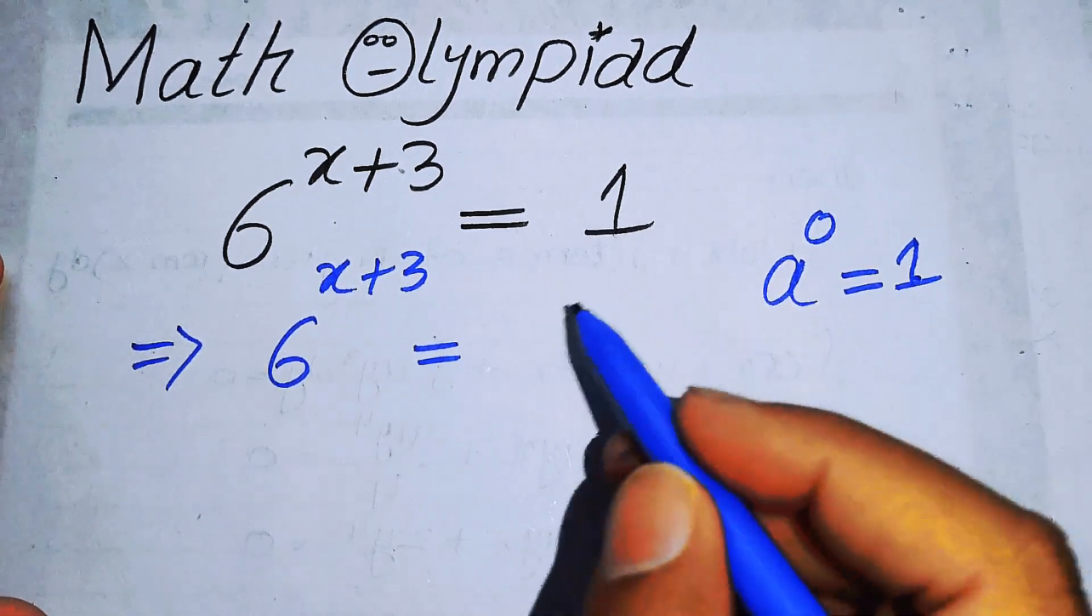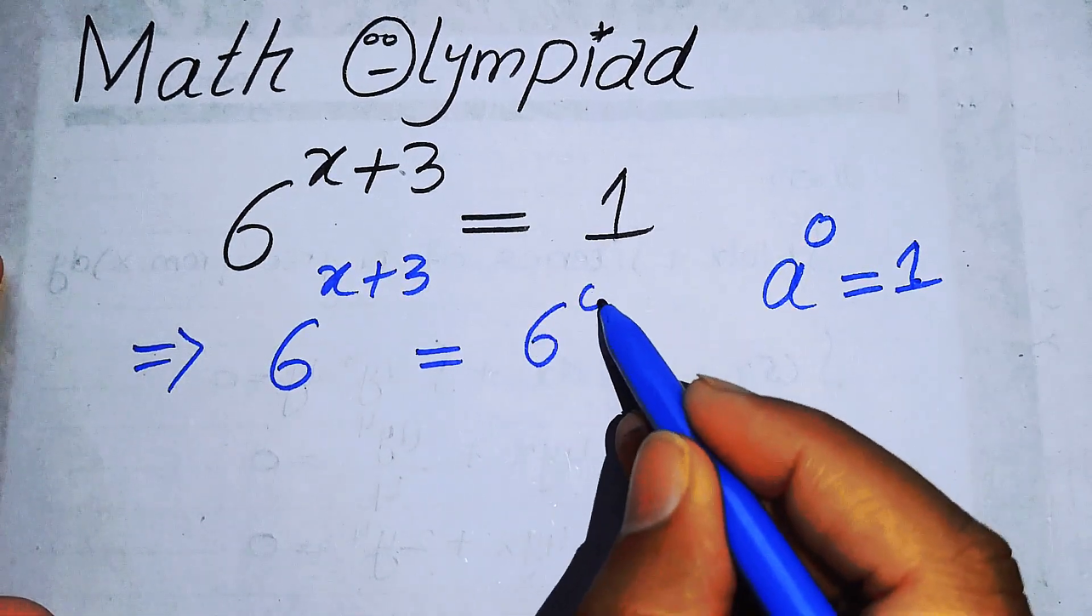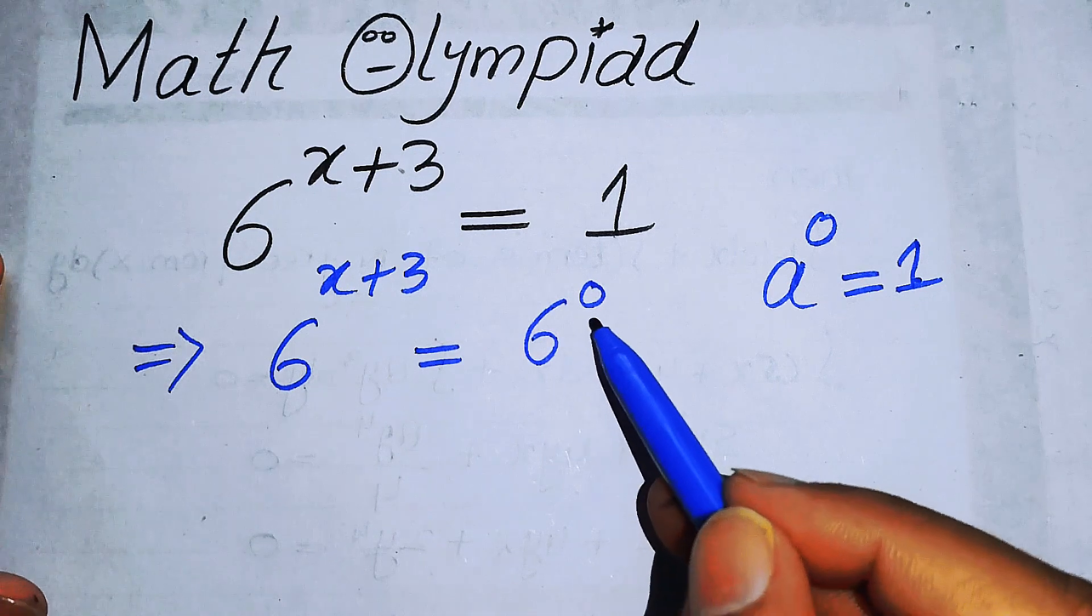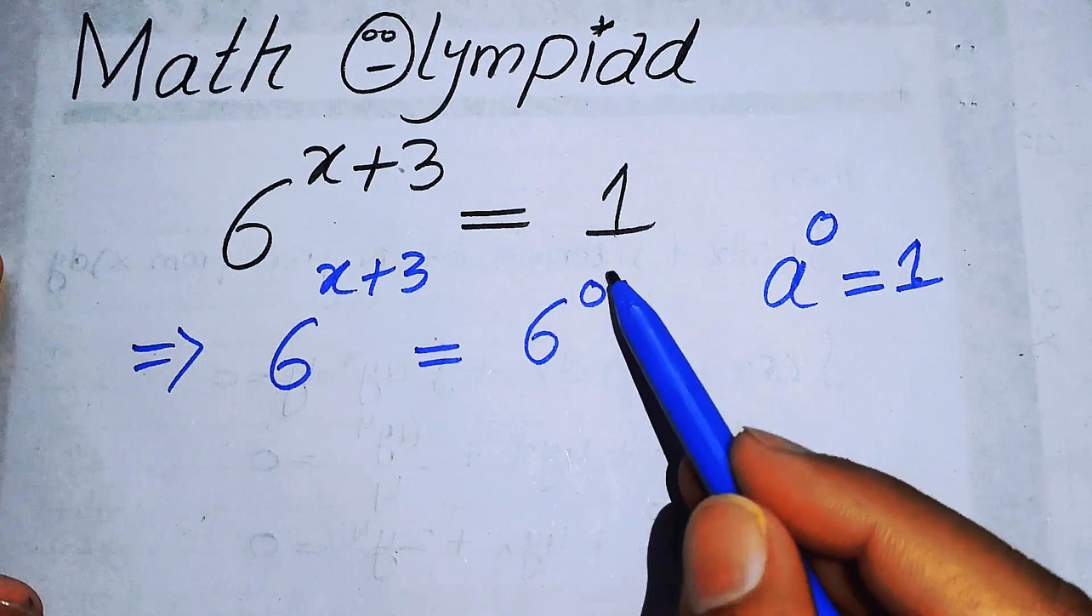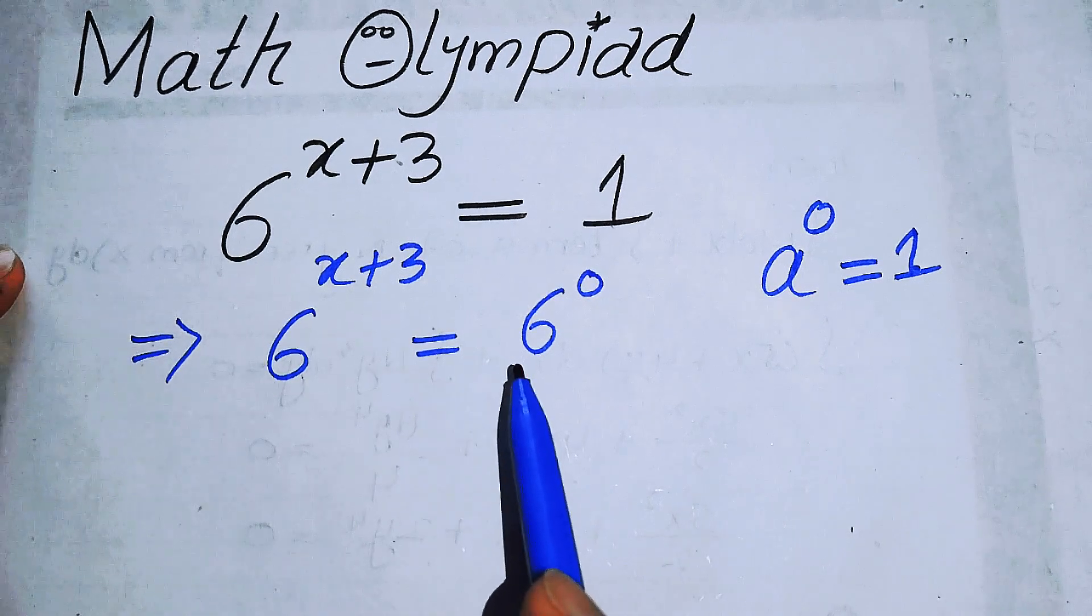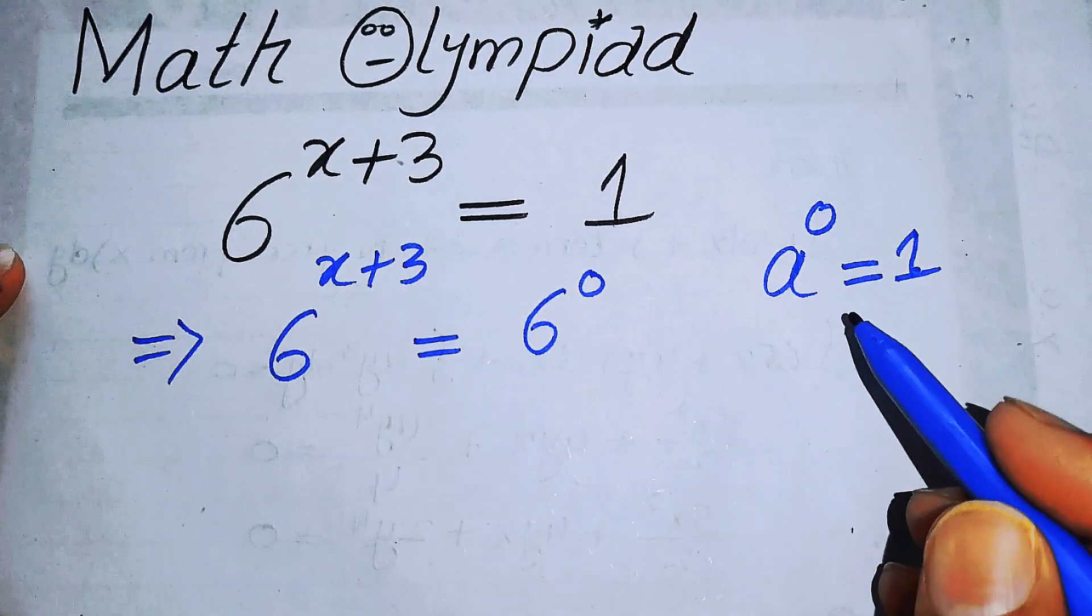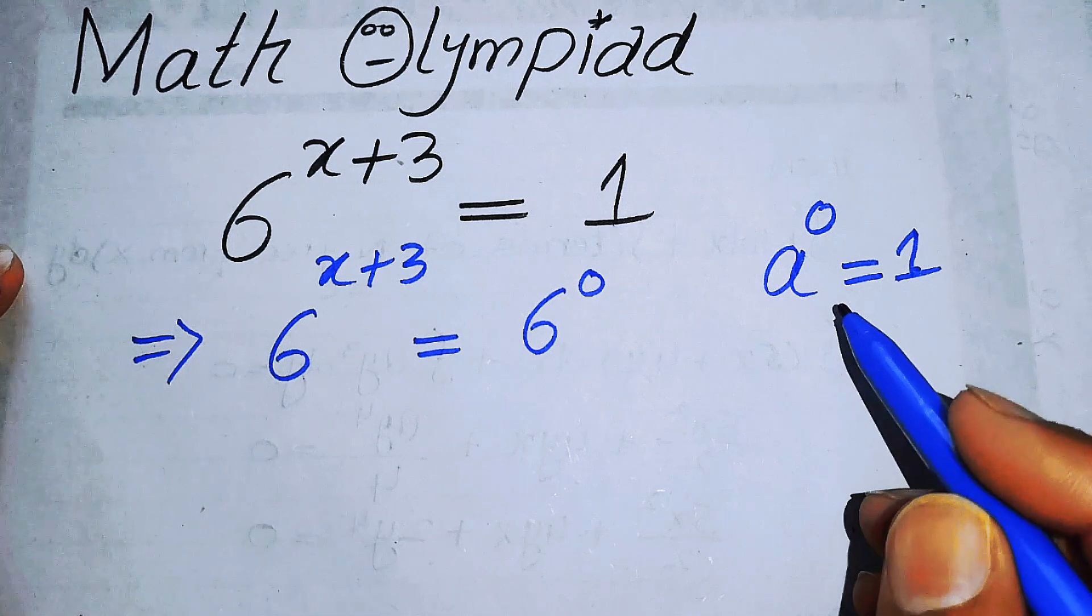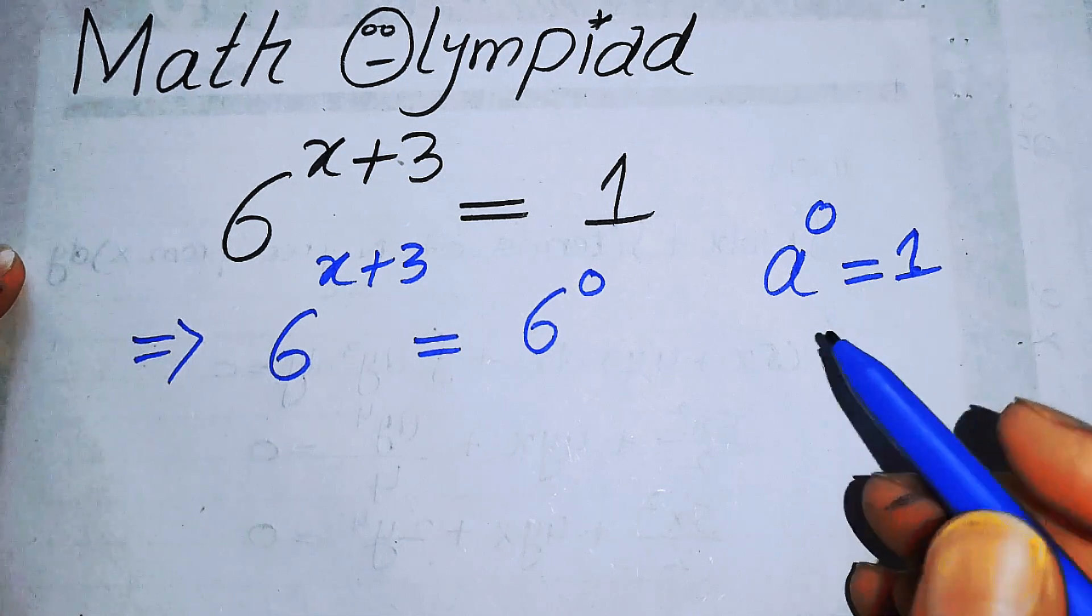So here I can write this one as 6 to the power of 0. So 6 to the power of 0 is also equal to 1. And here you can focus on both of the sides, and you see that bases on both sides are the same, so we will apply here an important exponent law.